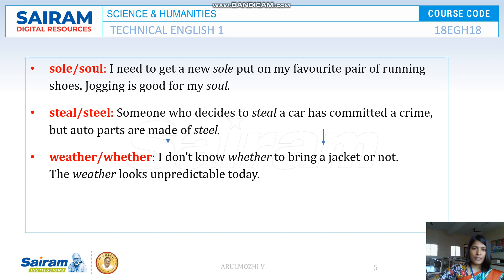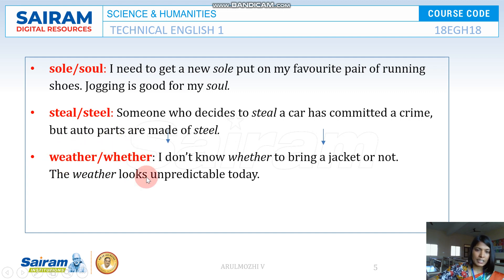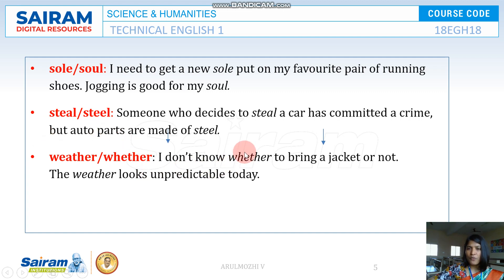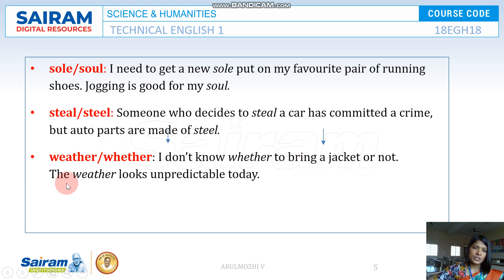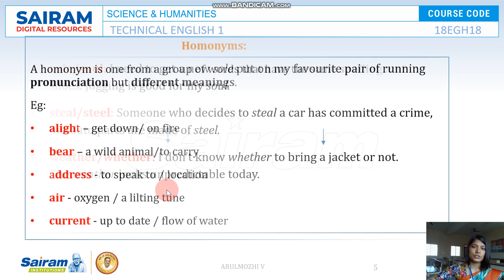Next is WEATHER and WHETHER. WEATHER refers to weather conditions or climatic change. WHETHER is a conjunction. For example: I don't know whether to bring a jacket or not, because the weather looks unpredictable today.